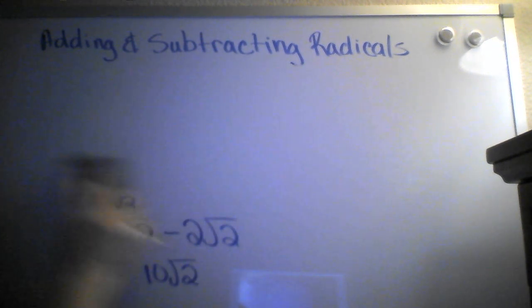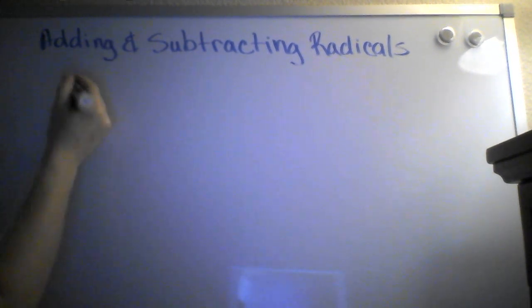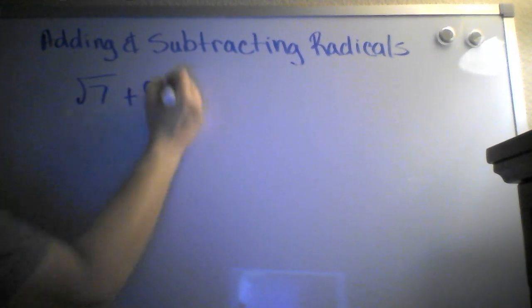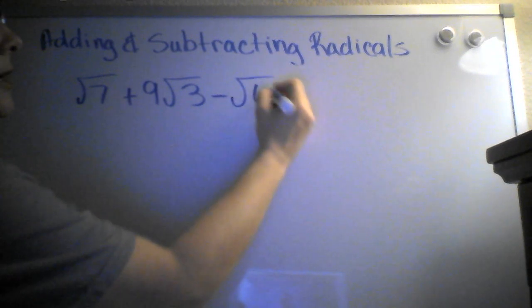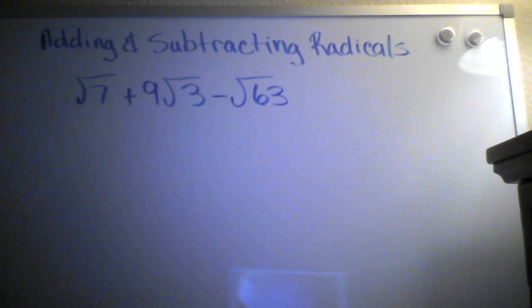Let's do another one. Let's say we have radical 7 plus 9 radical 3, minus radical 63. So in this problem, I have a radical 7, I have a radical 3. There's not anything I can do with those, but radical 63 has a perfect square factor in it.